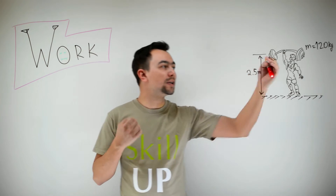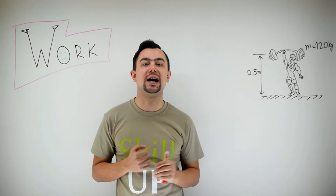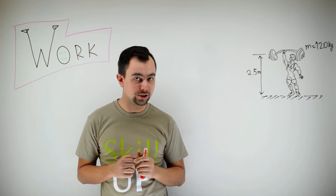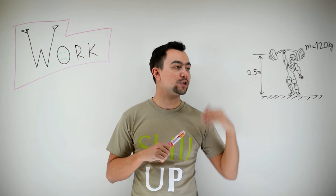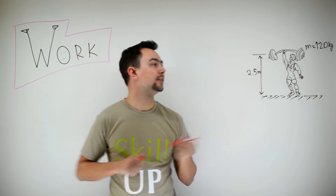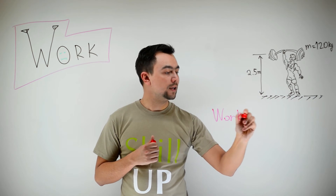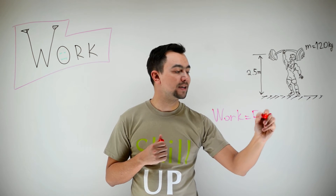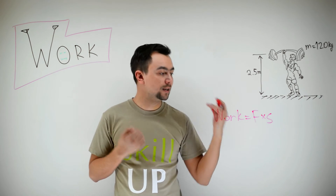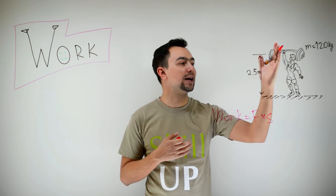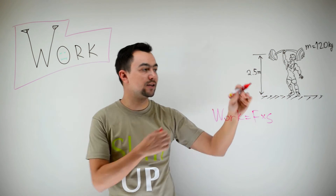A man lifts a 120 kilogram mass to a height of 2.5 meters. We need to find the amount of work done by the man. Work is force multiplied by distance. Cosine theta in our case is 1 because the angle is 0 — the angle between the force and the distance.